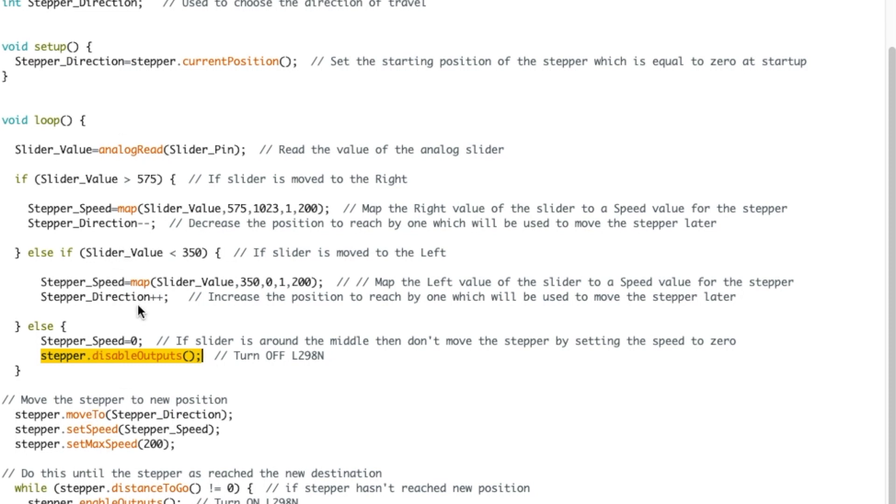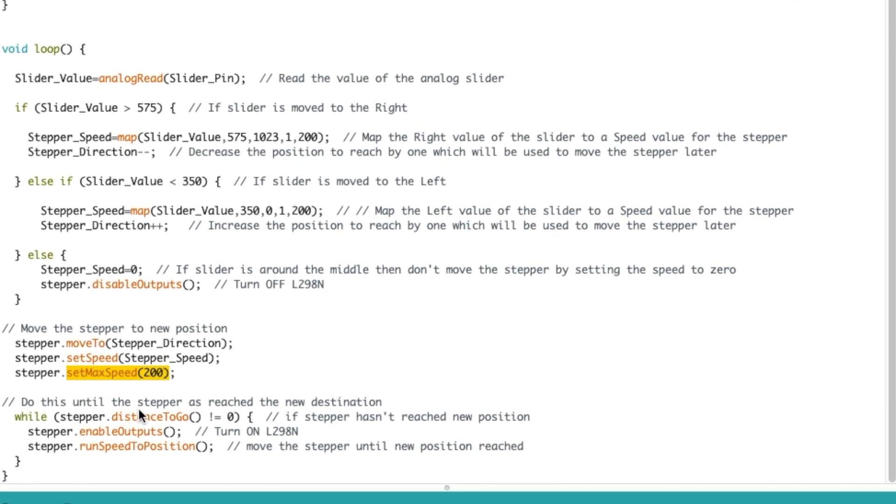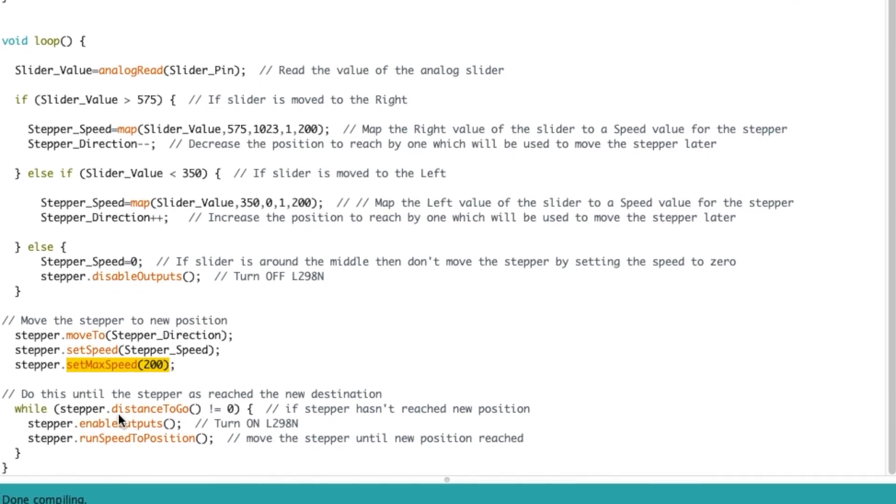Then once this has been done, then I'm moving the stepper to stepper direction. The stepper direction is plus plus or minus minus. So if it was zero, then it has to move to minus one. The stepper speed is set and the max speed. I have to use this to have the AccelStepper actually move at the correct speed. Then while the stepper distance to go is not equal to zero, that means we're giving time for AccelStepper library to actually reach the destination. That's why we're using a while statement.